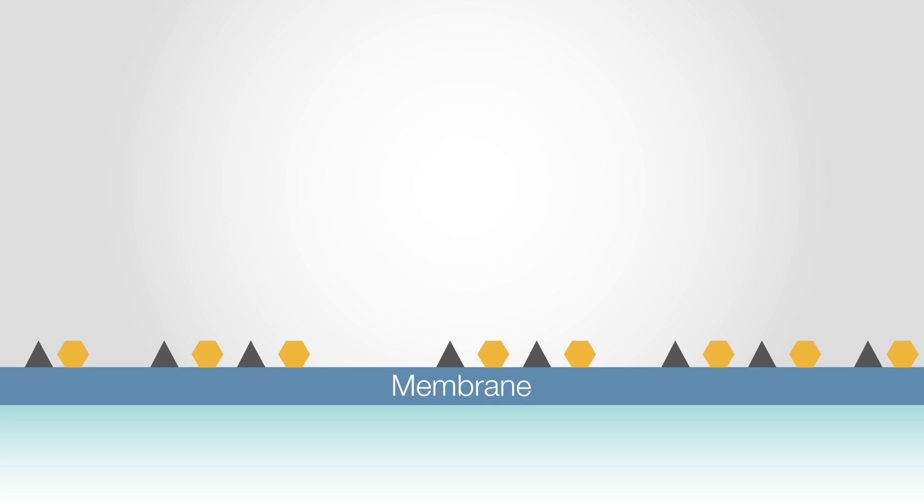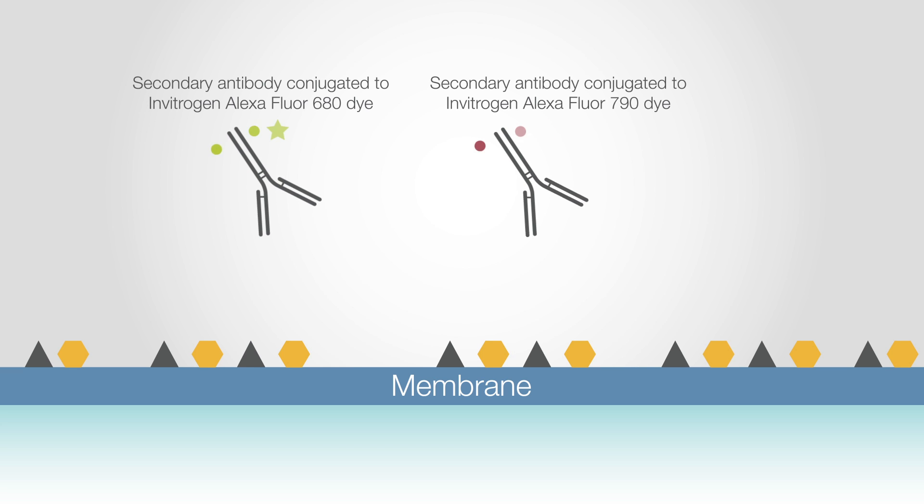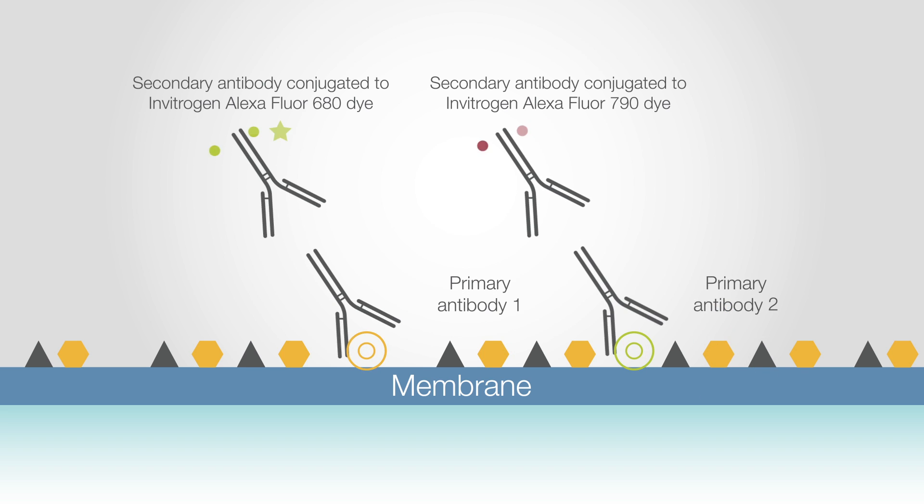By multiplexing with fluorescent antibodies, you can look at both total protein and phosphorylated protein in a single Western blot. The phosphorylation state of a protein can be visualized and quantitated using the right combination of secondary antibodies.